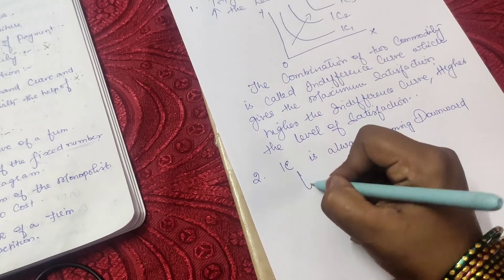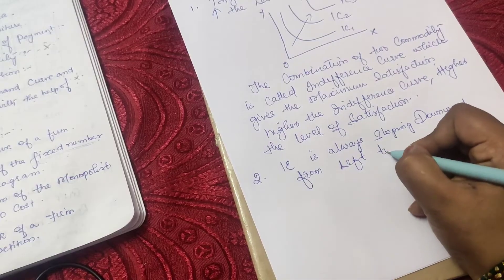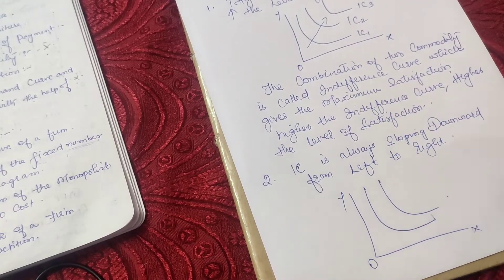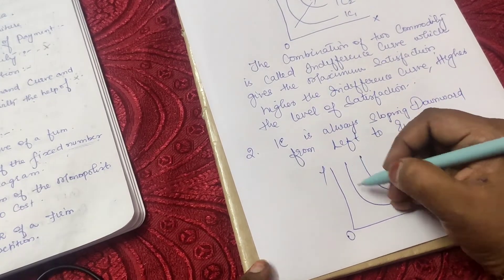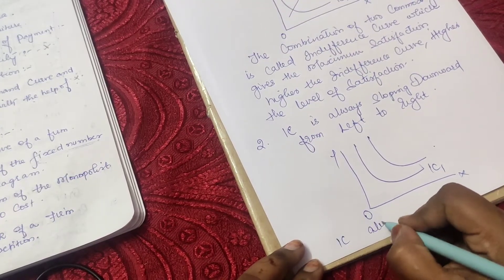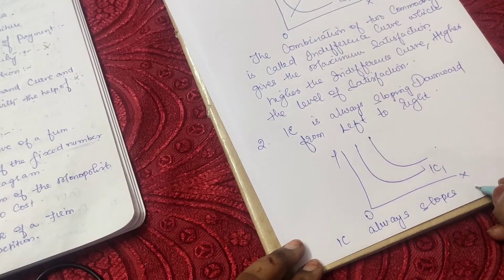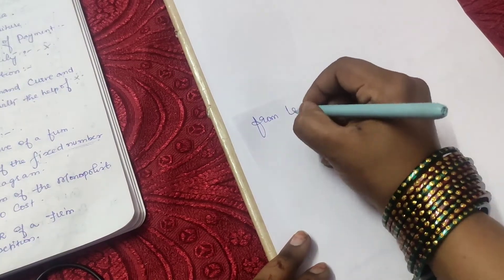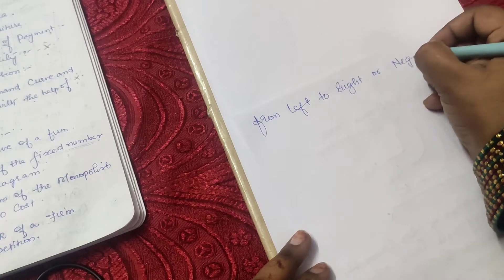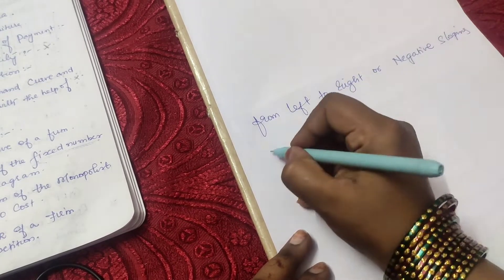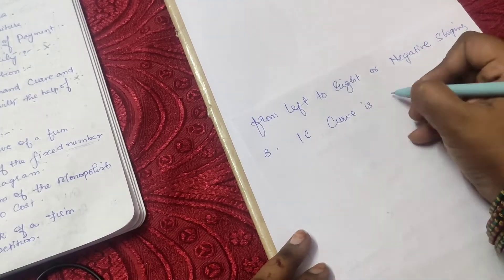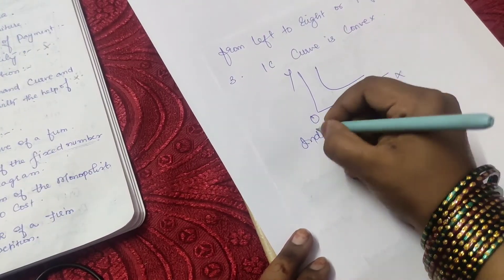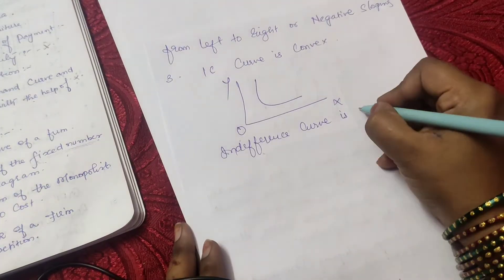The second feature: indifference curve always slopes downward from left to right. Again draw the X and Y axes with the origin and the indifference curve. Write that the indifference curve always slopes downward from left to right, or is negatively sloping.